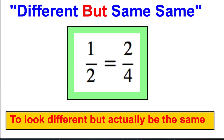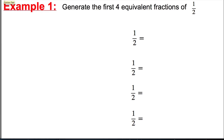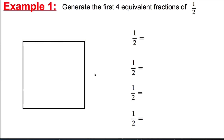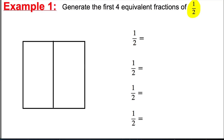Okay, let's have an example. Example one: copy this in your books. We're going to generate the first four equivalent fractions of a half and we're going to draw pictures to do this. To start with, we're going to draw a box — so draw a nice neat square in your book. The first thing we want to do is represent one half, so we're going to divide that square vertically.